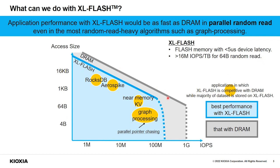Access size and IOPS are shown for DRAM and XLFlash. DRAM has better IOPS and better bandwidth, indicated by the loop lines. However, XLFlash covers all applications we've tested and showed competitive performance with DRAM. So we are investigating a flash-based CXL memory solution using XLFlash, a low-latency flash memory.